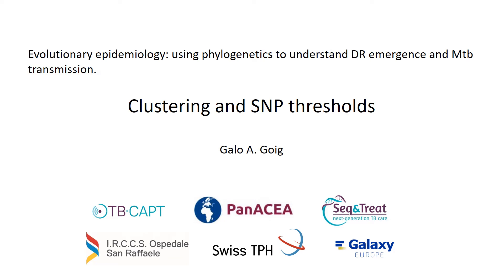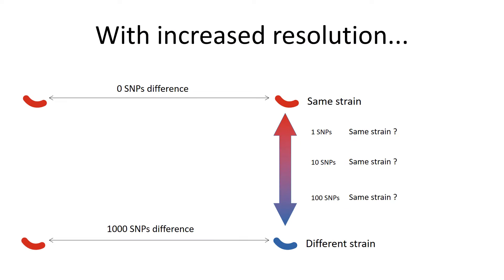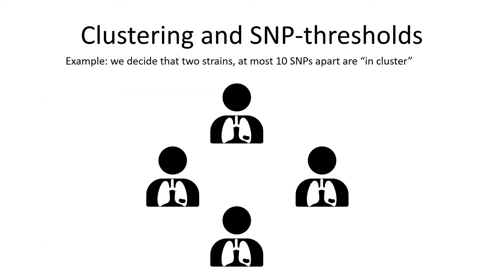Hello and welcome to this webinar in which we will be talking about SNP thresholds and how to use them in clustering analysis. We introduced the problematic in the previous webinar. We want to use a SNP threshold — a SNP distance between two genomes — that defines cases linked by recent transmission. I would like to start with a very schematic representation of what clustering analysis is.